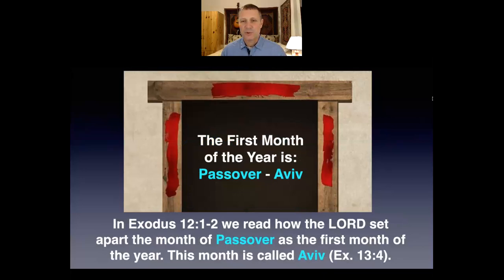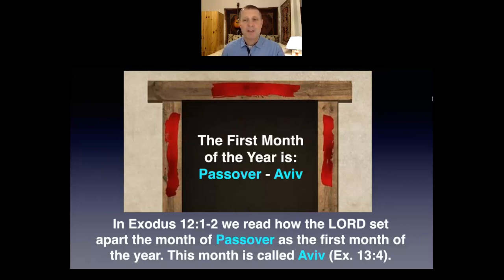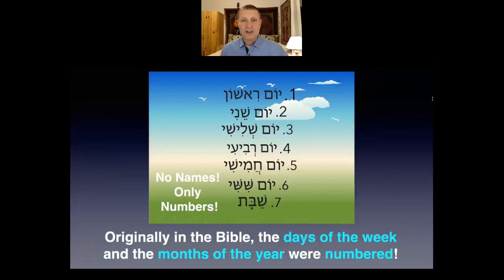In Exodus chapter 12, verses 1 and 2, we read how the Lord set apart the month of Passover as the first month of the year. This month is also called Aviv, as we see in Exodus chapter 13. And then later, we know there are other names given for the months of the year — the Babylonian names. Originally, though, God only gave numbers for the days of the week and the months of the year, outside of that first month, Passover, or the month of Aviv. Even up to today, in Hebrew, we use the numbers for the days of the week and the months of the year.